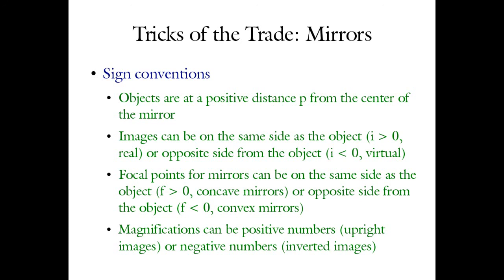This concludes the lecture on mirrors. In the next lecture, we will move into thin lenses — rather than looking at the effects of reflection on rays and ray tracing, we will look at the effects of refraction on rays and ray tracing, develop a very simple lens system known as the thin lens, and look at the implications of image formation for different kinds of thin lenses.